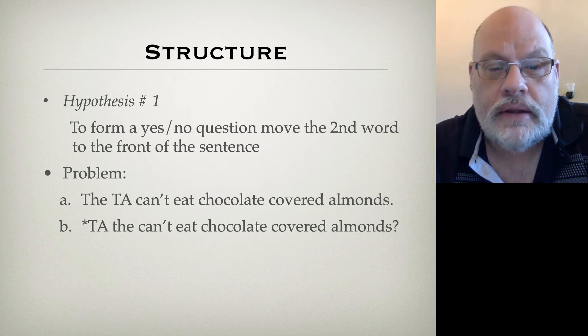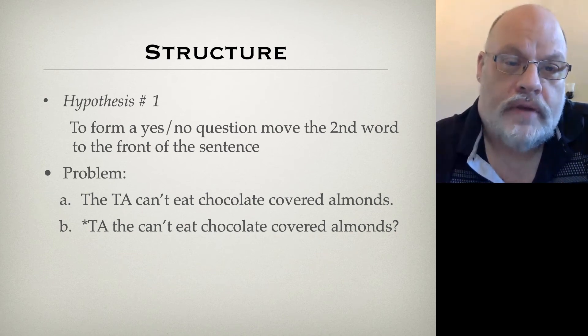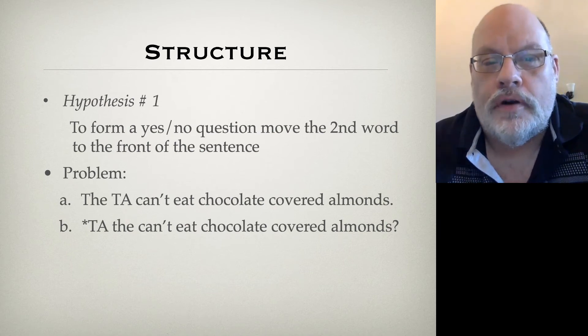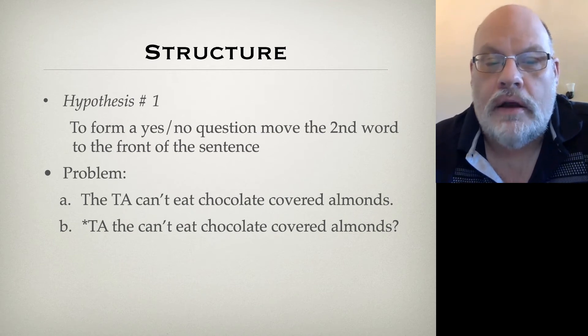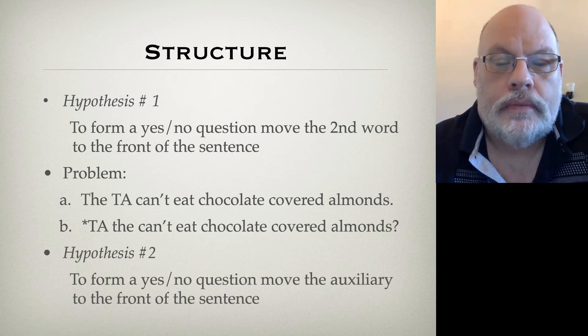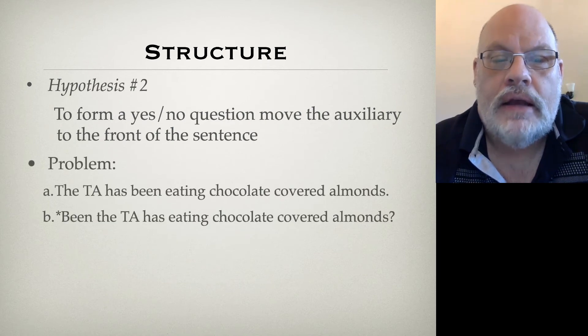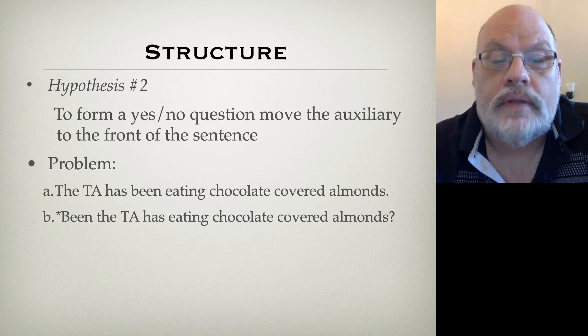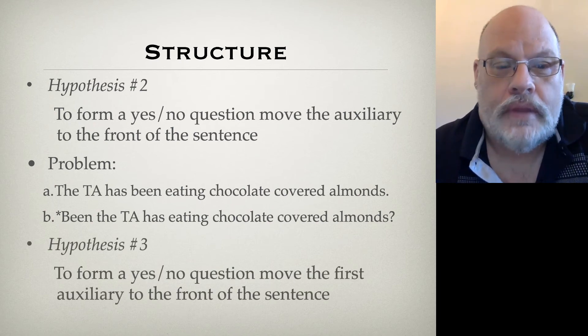We need something better than that. Perhaps instead of just counting, what you do is you know about categories. Maybe what you do is you look for the first verb you find. So we have that auxiliary verb, can't. Maybe you scan along until you find the first auxiliary, and then you invert it. Let's try that. And we find here, again, we have a problem. Take the TA has been eating chocolate-covered almonds. There are two auxiliaries here, and in fact, it's only the first one that can move. So that's a problem. Maybe it's the case that you move the first auxiliary.